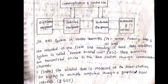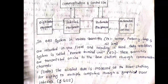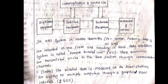In a distribution automation system, quantities like voltage, frequency, and temperature are recorded in the field using a data acquisition system (DAS), also known as RTU — Remote Terminal Unit. These quantities are transmitted online to the base station through communication channels. Through the RTU, data is remotely transferred via communication channels to the base station.